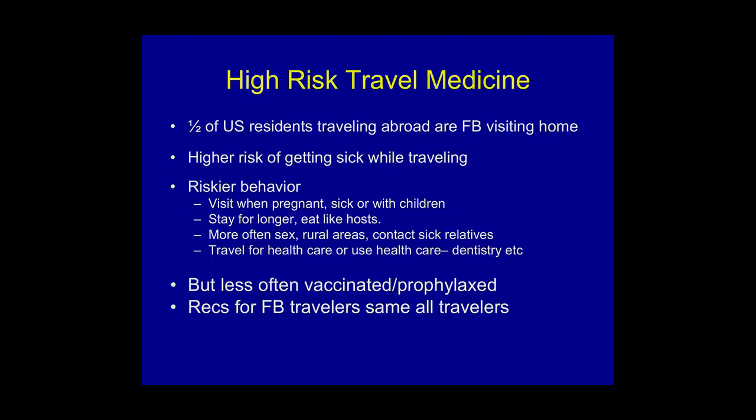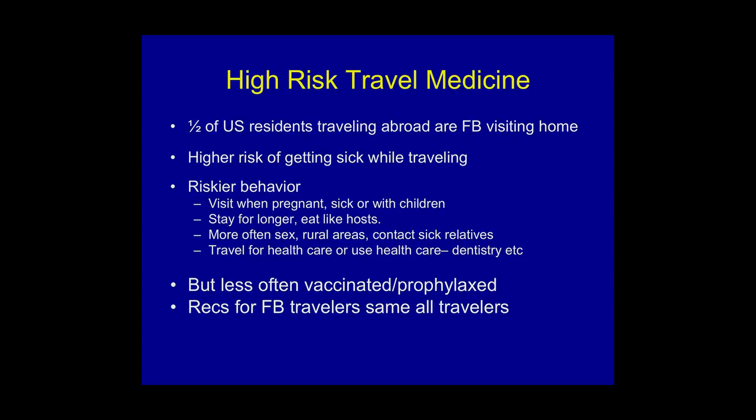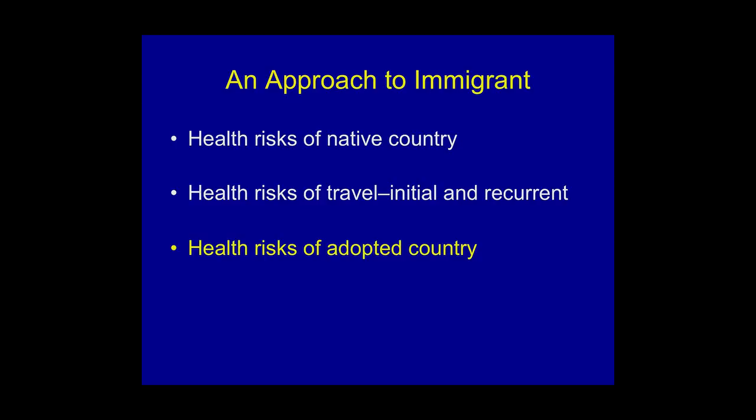Another area of travel risk is going back and forth. Our immigrant patients are our highest-risk travelers, and yet they almost never receive travel advice — because doctors forget to ask, and because patients think, 'I'm going home,' not considering it exotic travel. But our immigrant patients are our highest-risk travelers: they are most likely to go out to rural areas, eat local food, or go home to get dental work done because they can't afford it here. Medicines brought back from home are also a big issue.